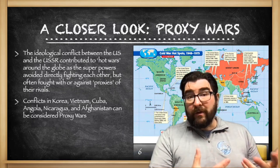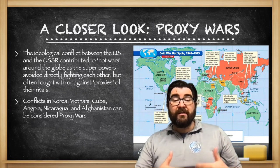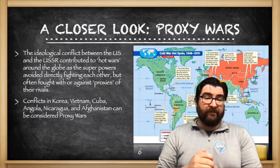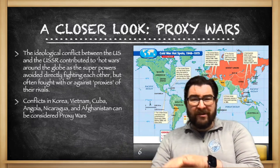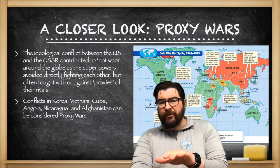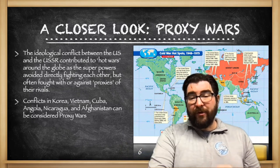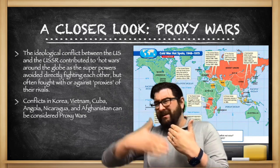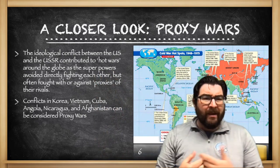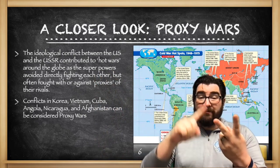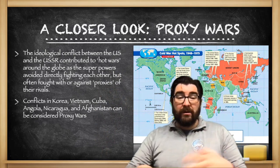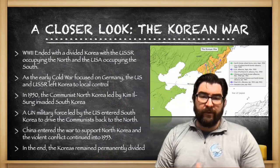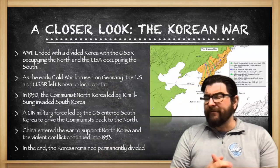The ideological conflict between the US and the Soviet Union contributed to many hot wars during the Cold War, where the superpowers would avoid fighting each other directly but often fight with or against proxies of their rival. The word proxy just means next to, like proximity. Conflicts in Korea, Vietnam, Cuba, Angola, Nicaragua, and Afghanistan can all be considered proxy wars during the Cold War.